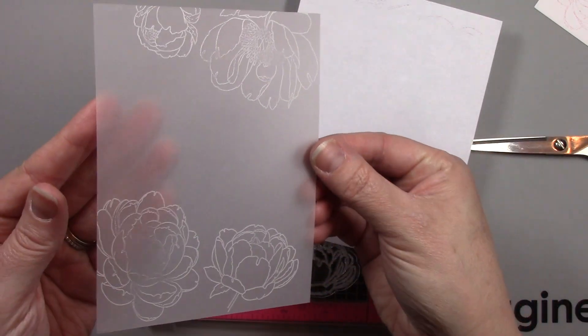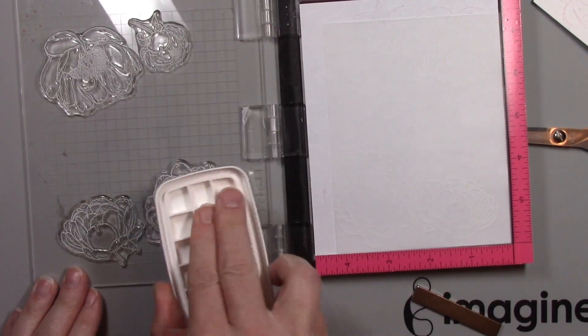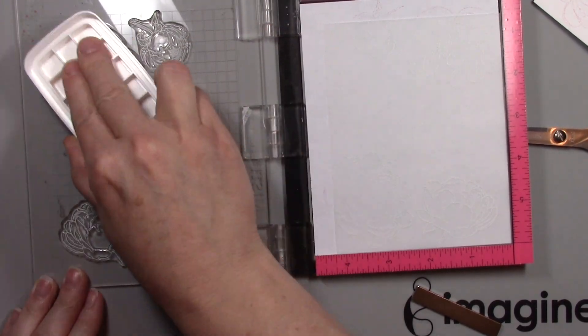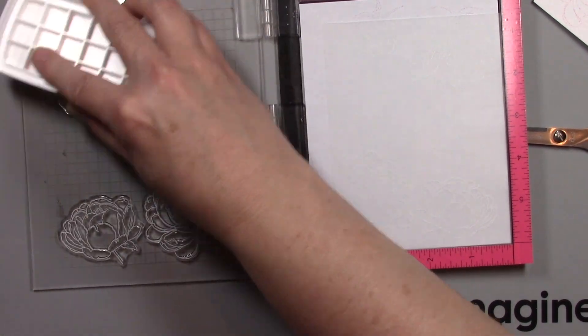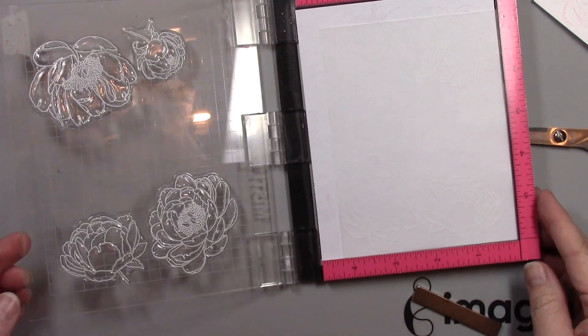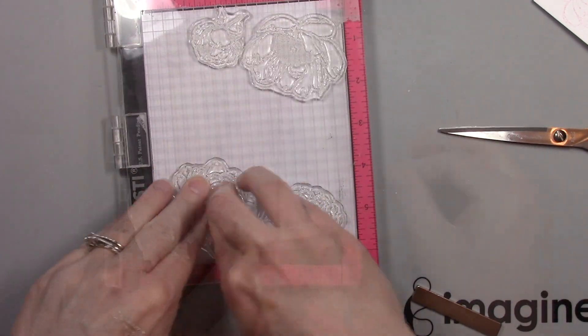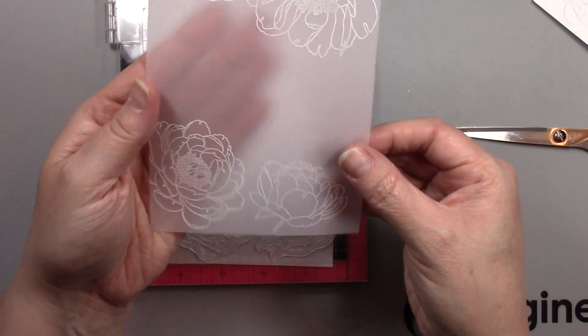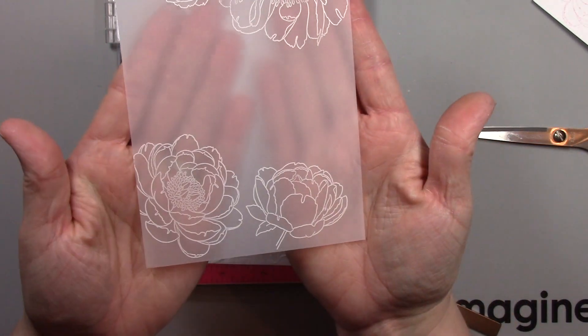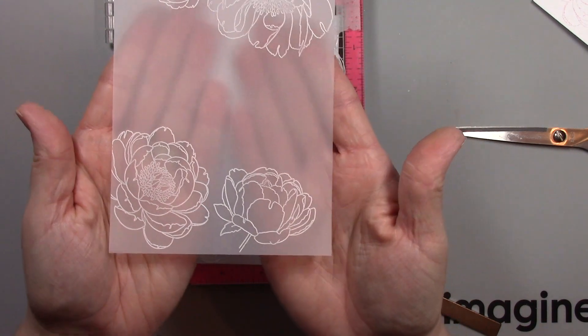Now I do want a very bold white outline on this vellum because this is going to be the front of my card and I didn't want it to overshadow the technique that I'm going to use below. So I stamp again and you can see I get a beautiful impression on those peonies on the vellum.